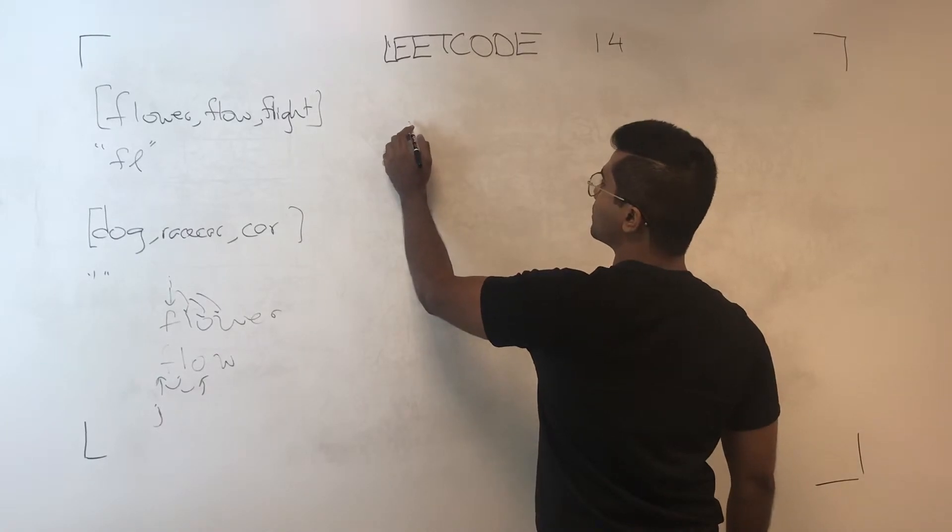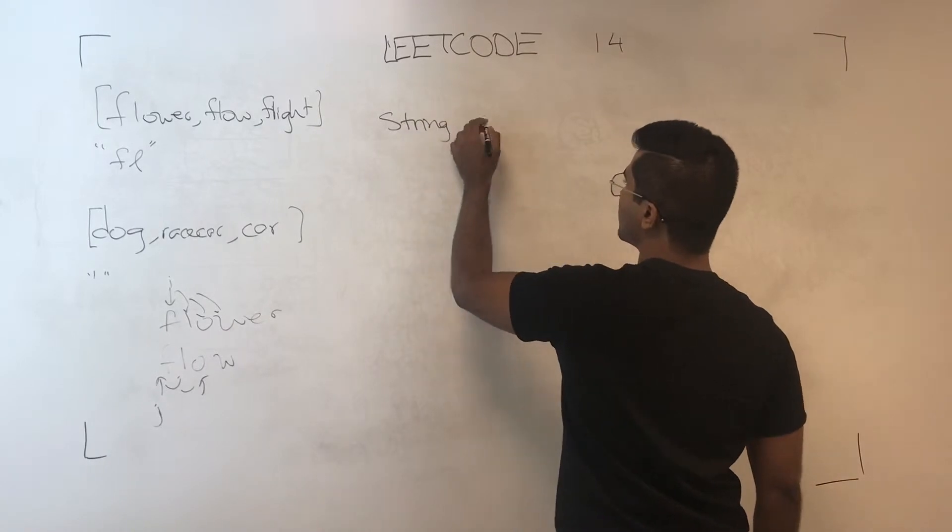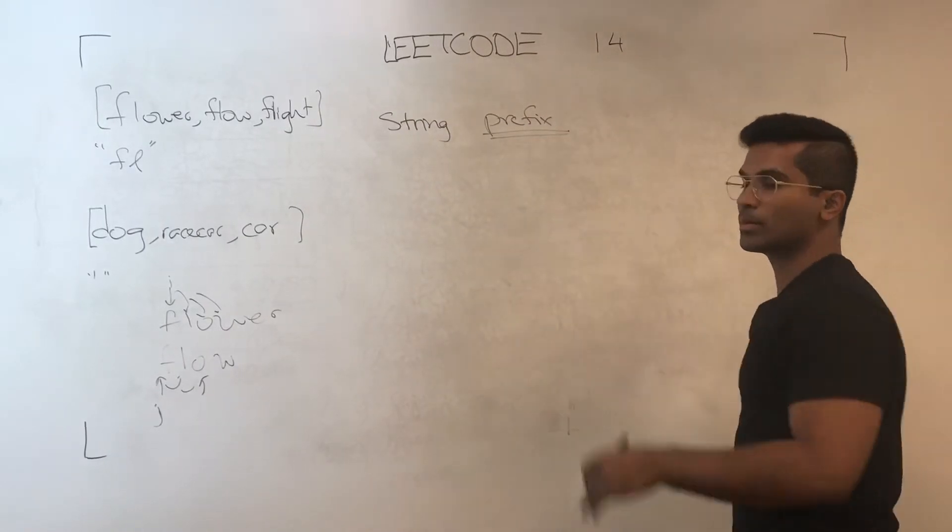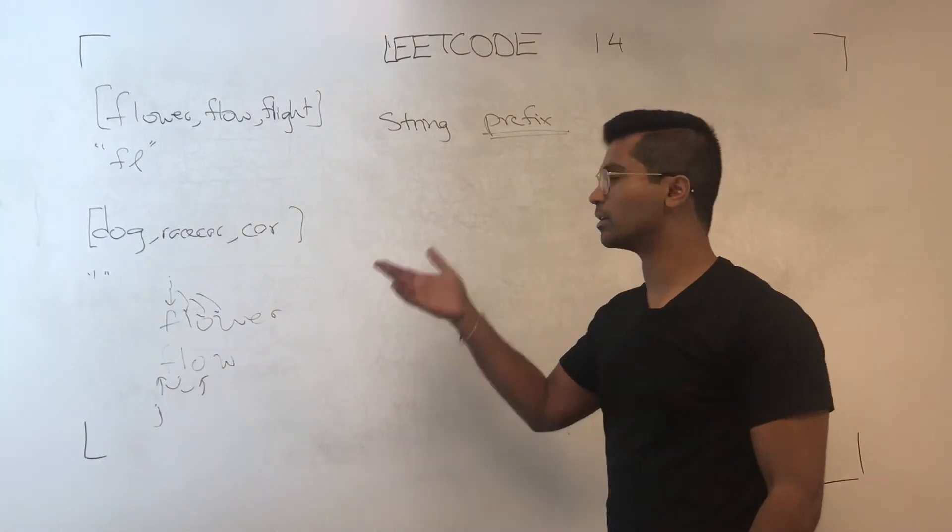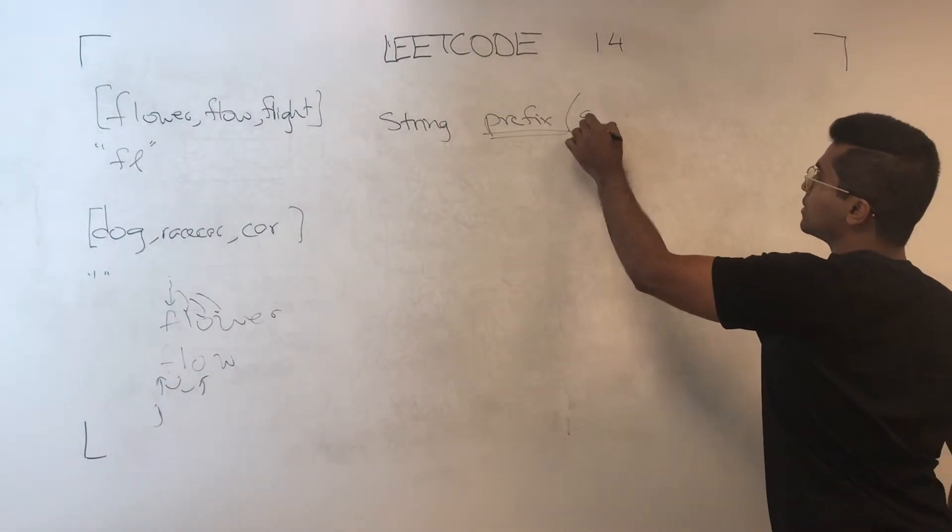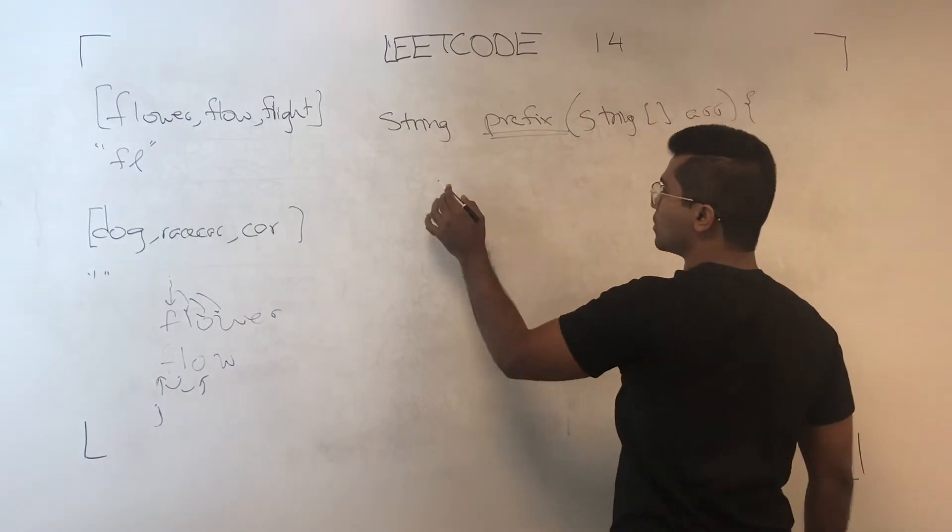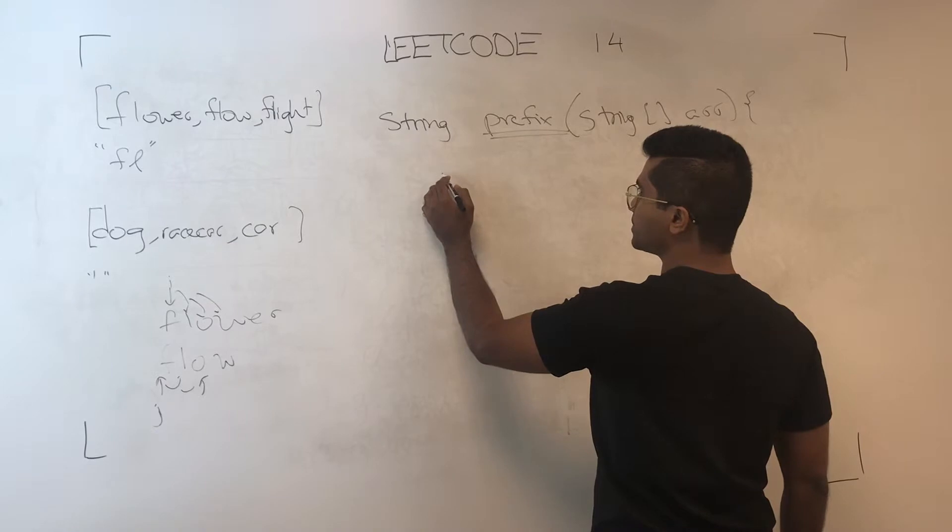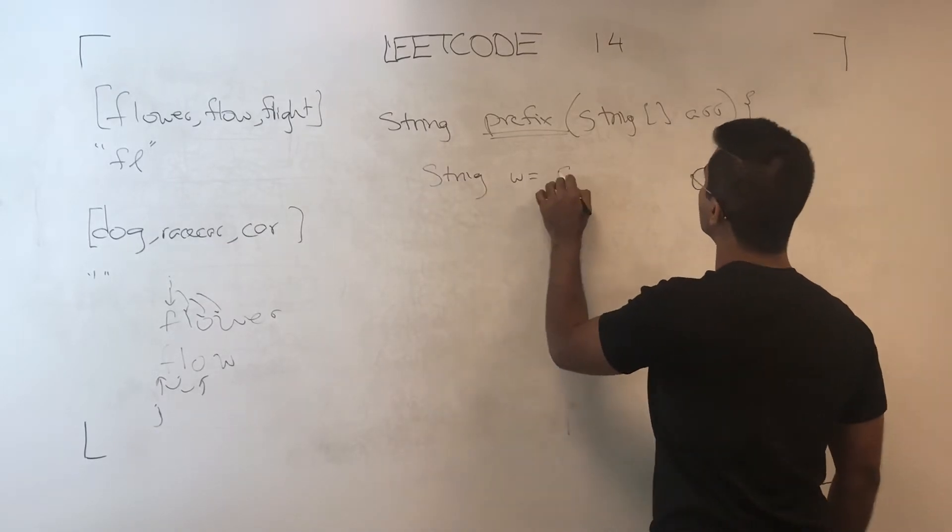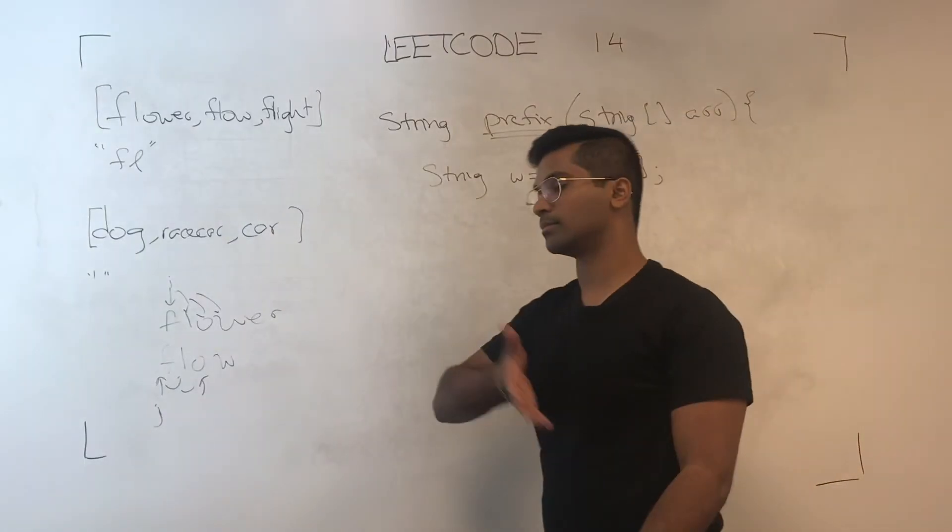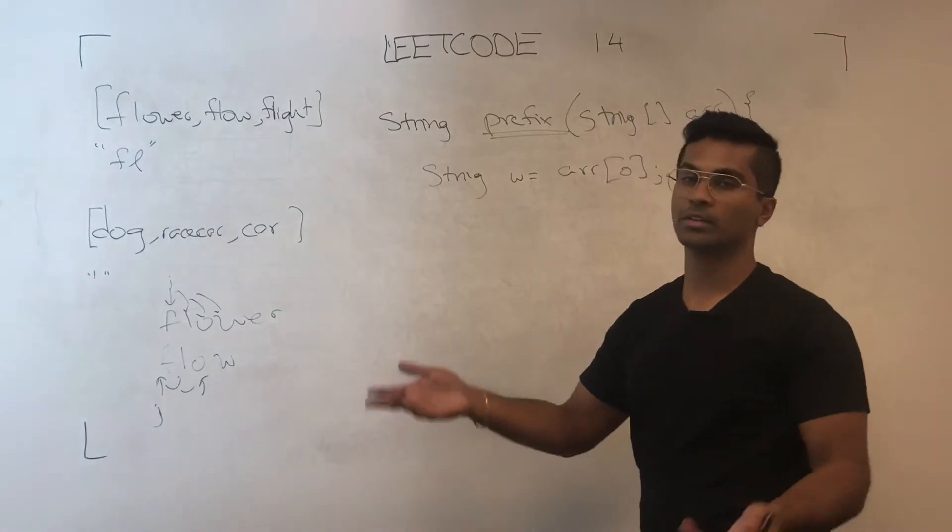If the input is, string prefix, I can't remember what the exact method says on LeetCode, but it's something like this. String arr, so what we need, string w equals arr of 0. I'm assuming that the array's going to have at least more than one.